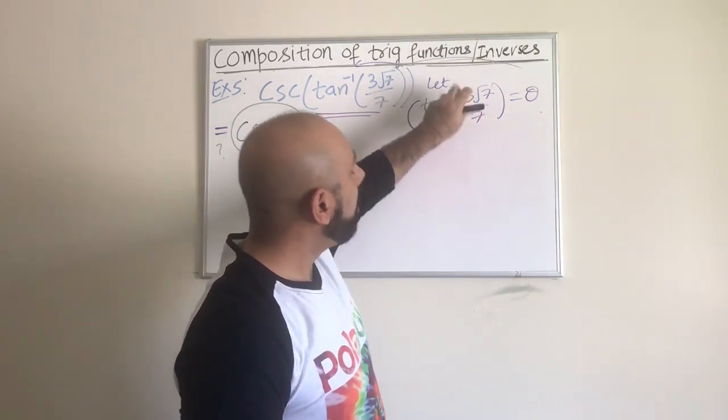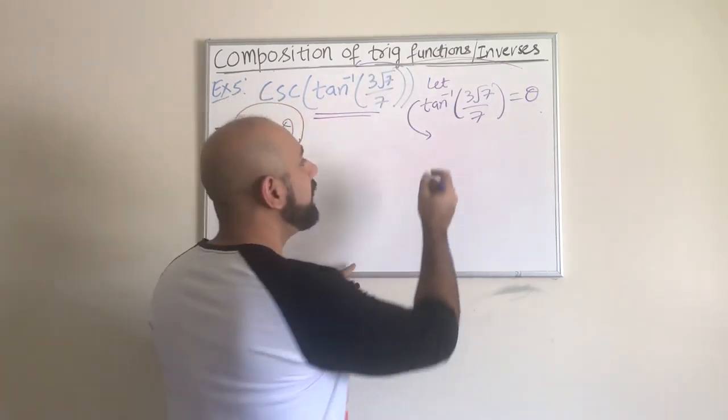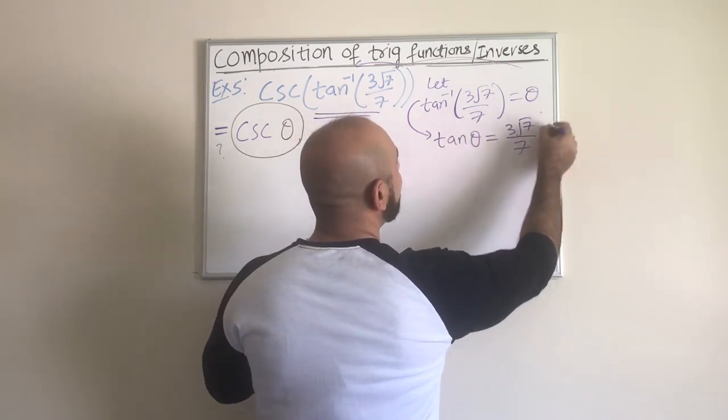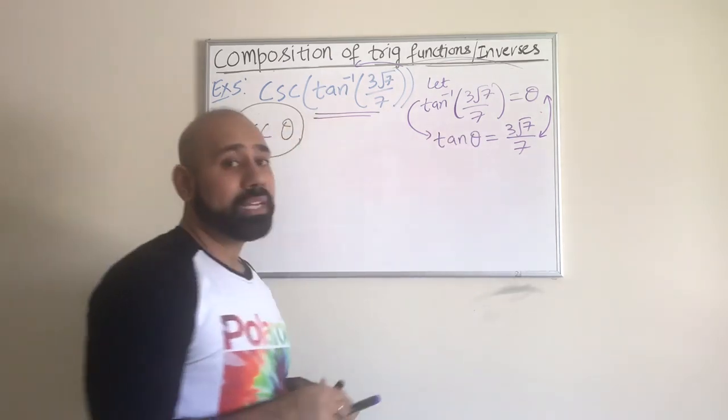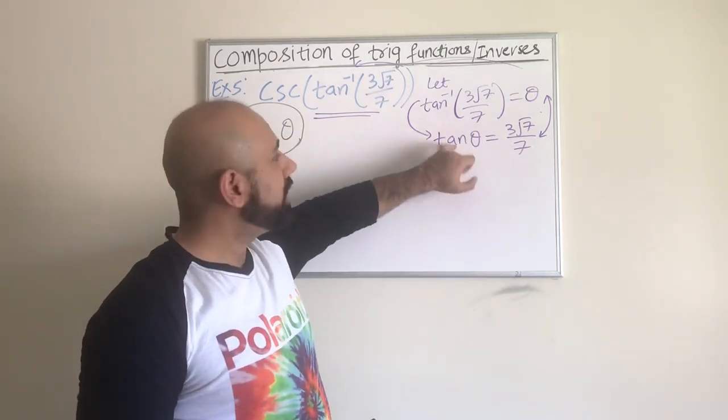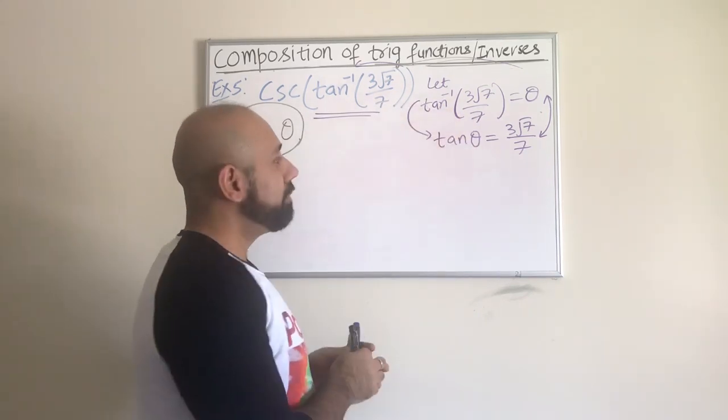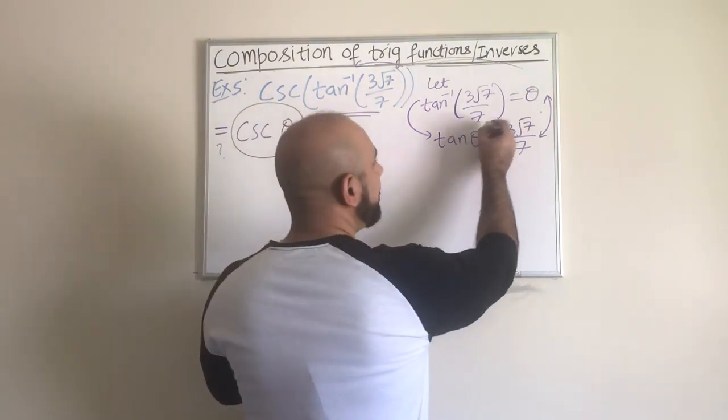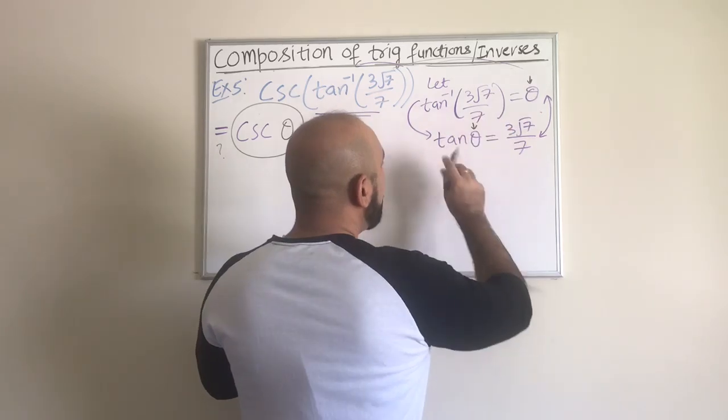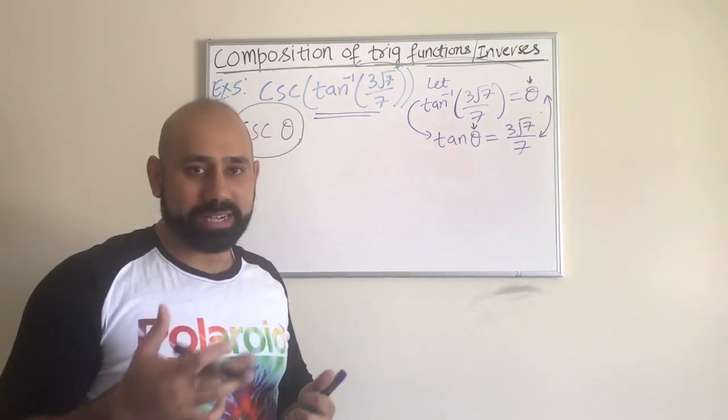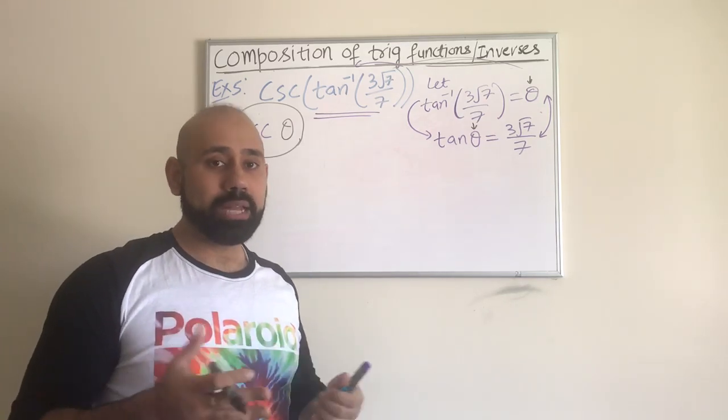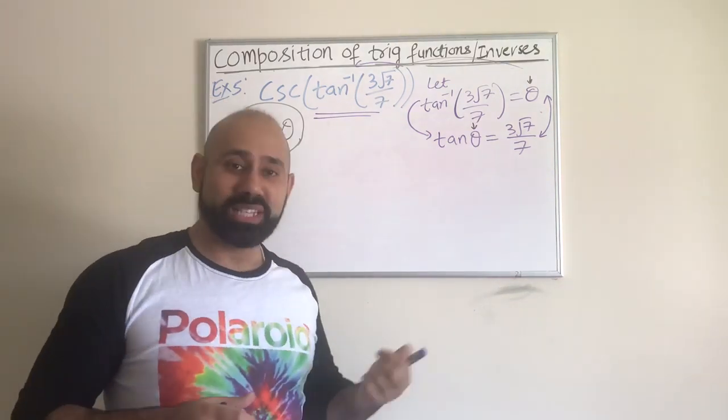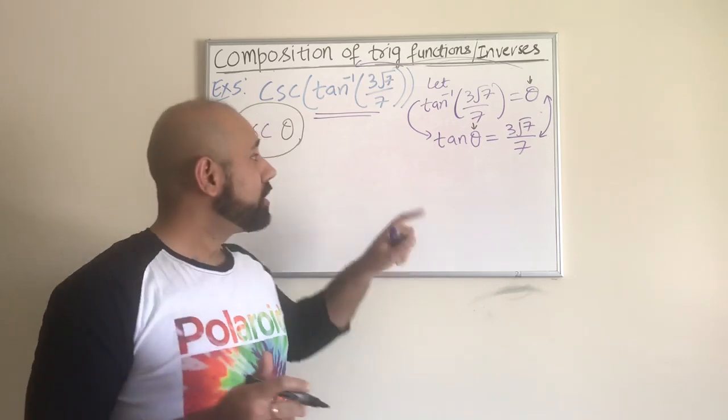Understanding that tan inverse of a ratio equal to theta is equivalent to saying tangent of what angle is 3√7 over 7. They are basically equivalent equations written in two different ways. This is more user-friendly, this is slightly more complicated, but they're giving us the same information. We cannot find theta directly without a calculator, so we need these values without using a calculator.